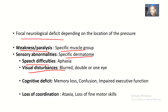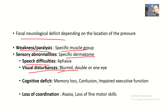There could be visual disturbances: you could have blurred vision or double vision, which is diplopia. Double vision or blurred vision can affect one eye or both eyes. There can also be cognitive deficits — having problems recognizing people, memory loss, confusion, and impaired executive function.